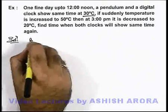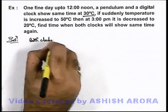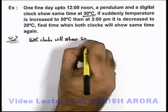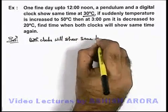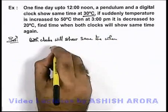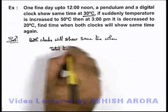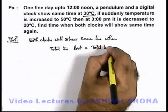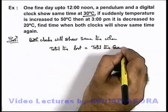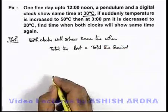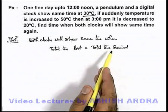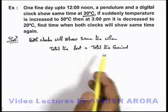So we can write: both clocks will show the same time when total time lost by the clock is equal to total time gained by the clock. And we know that total time lost by the clock can be calculated by half alpha delta-t multiplied by the duration, where the variation in temperature will be different for each phase.